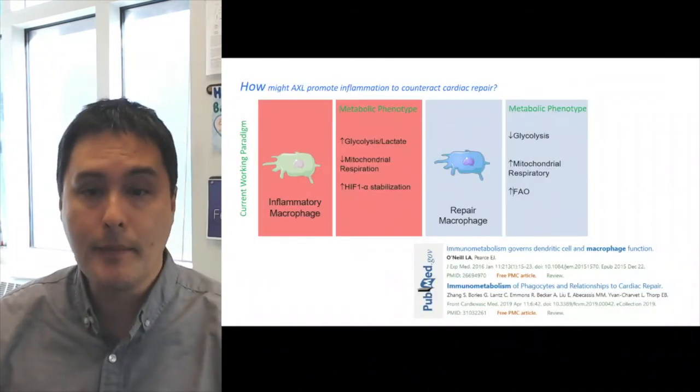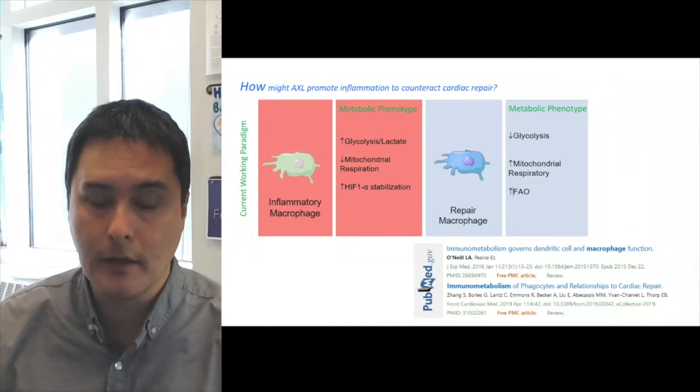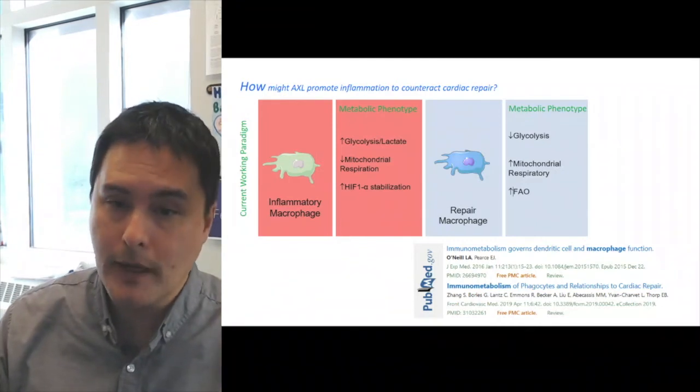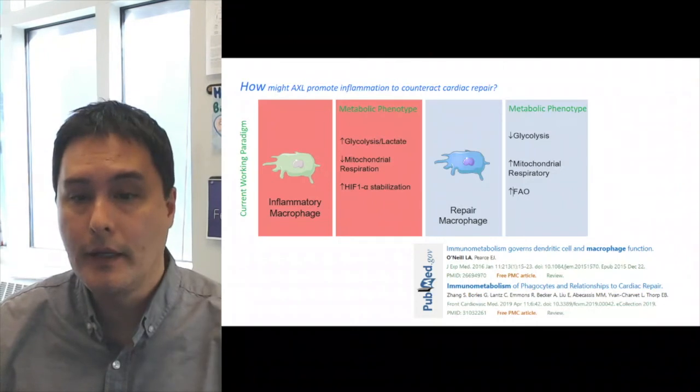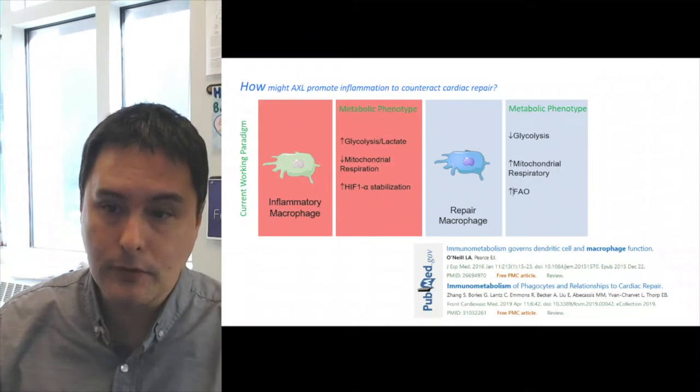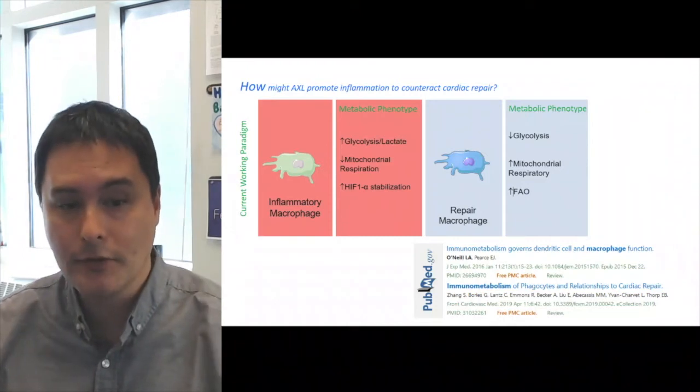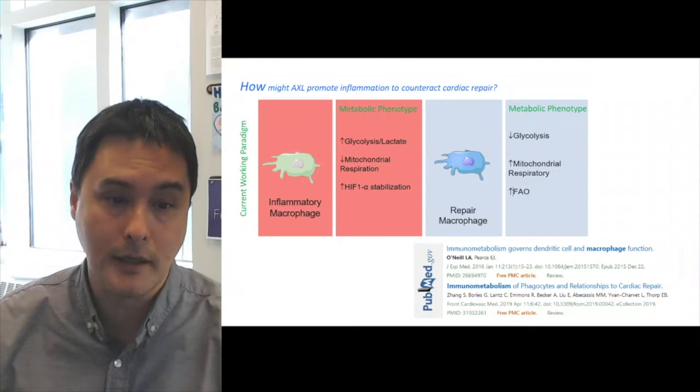So the question next became how might AXL promote inflammation to counteract cardiac repair? One of the current working paradigms in the field is that inflammatory macrophages exhibit this metabolic phenotype that's characterized by heightened glycolysis and reduced mitochondrial respiration. This is in contrast to repair associated phase macrophages in which their metabolic phenotype is more associated with a reduction in glycolysis and enhanced fatty acid oxidation or mitochondrial respiration.